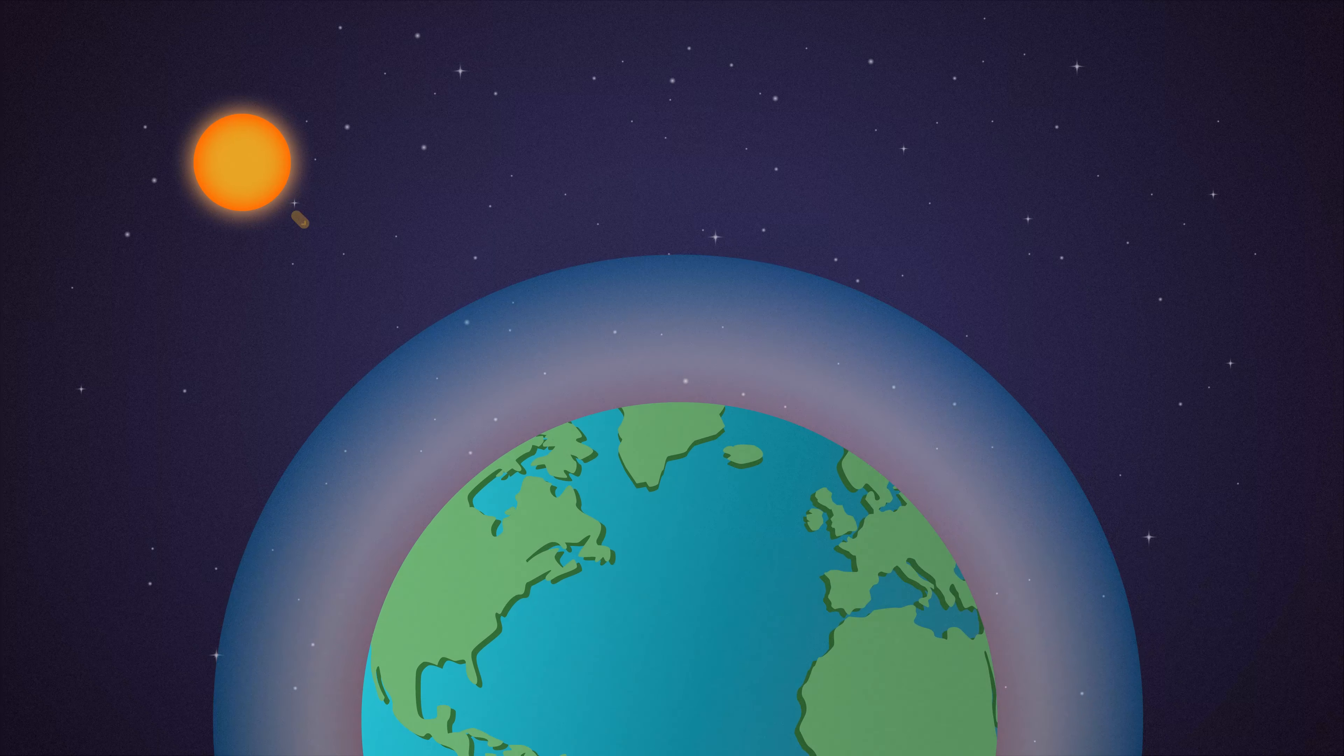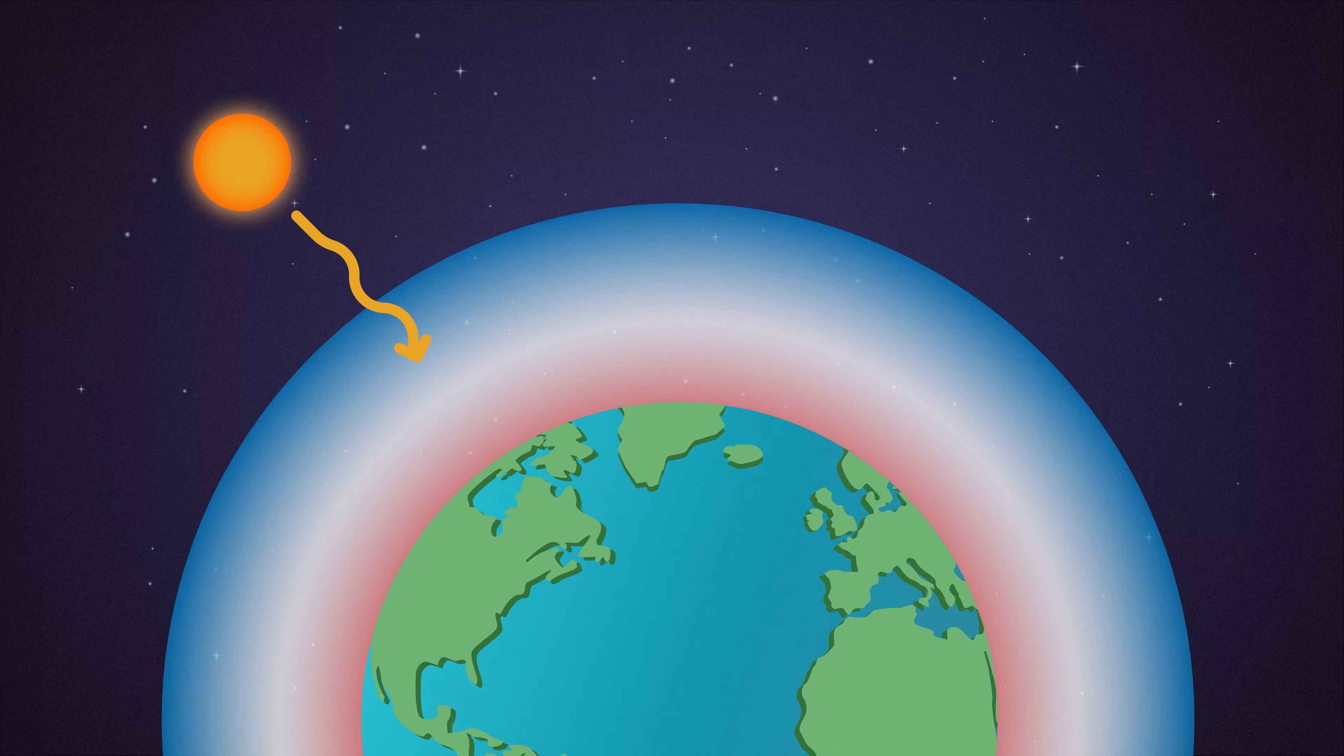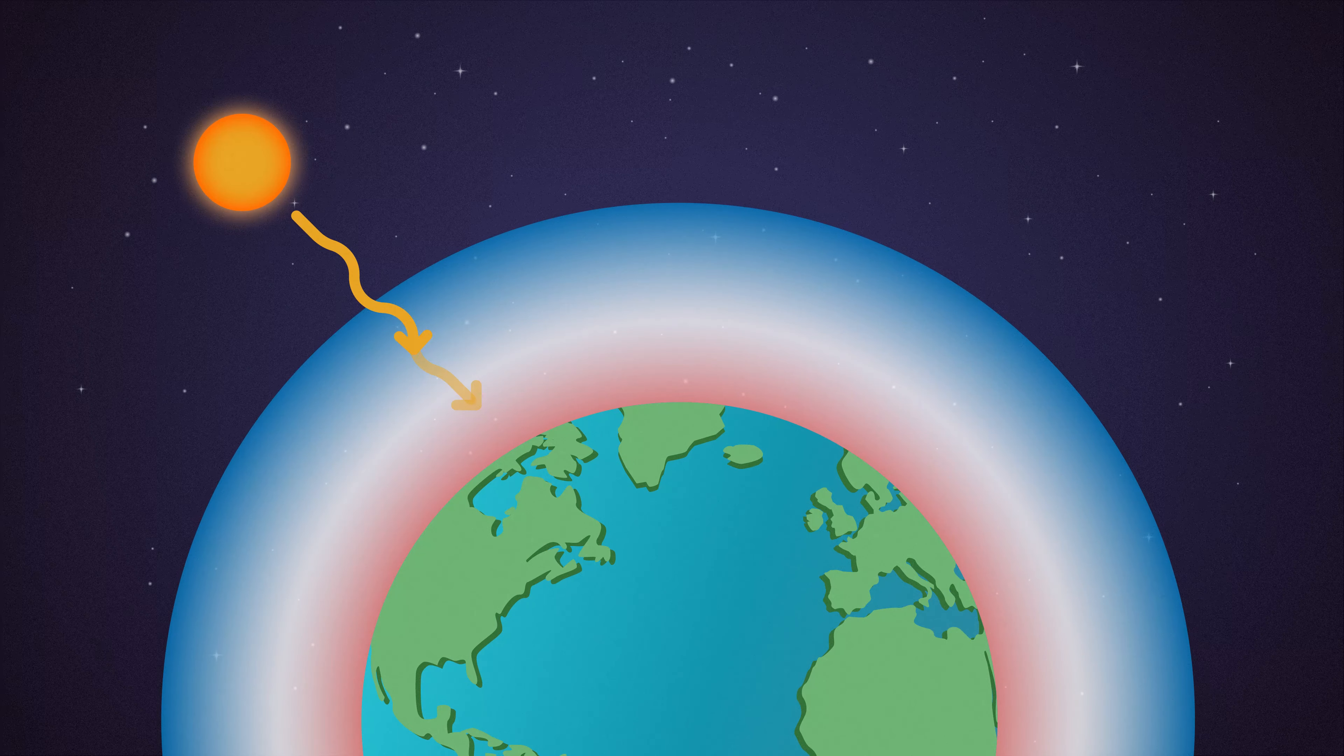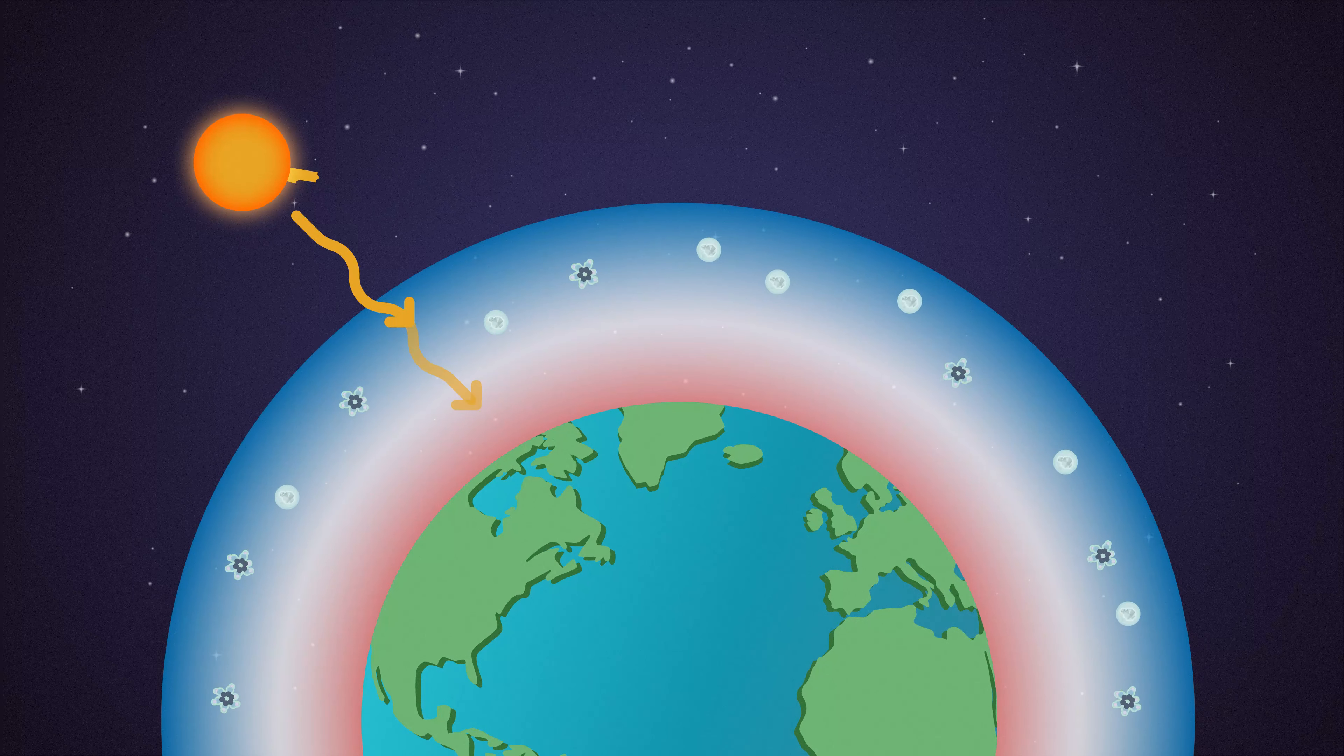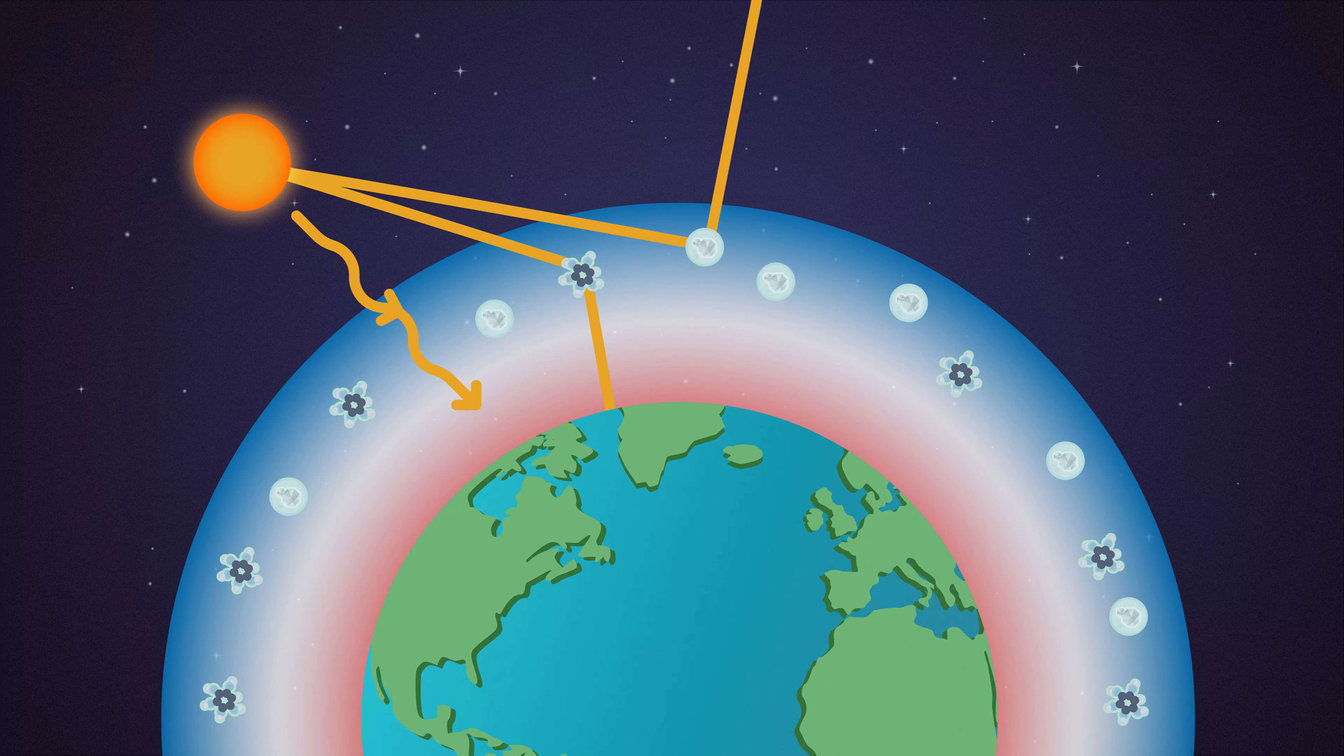The sun's energy powers our planet's climate, but not all the energy that reaches the top of the atmosphere makes it to the Earth's surface. Some of the energy can be reflected or absorbed by aerosols floating in our atmosphere.